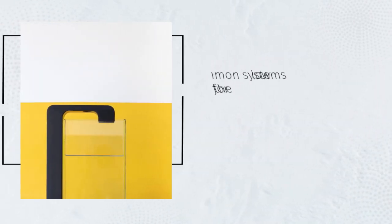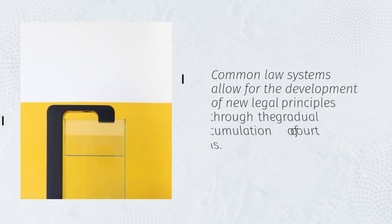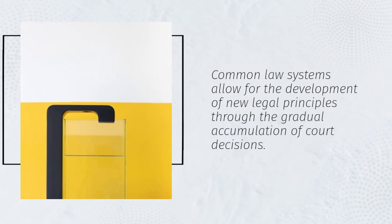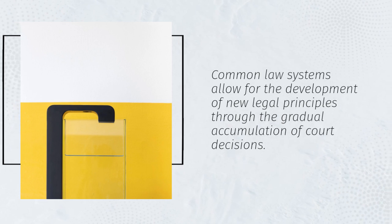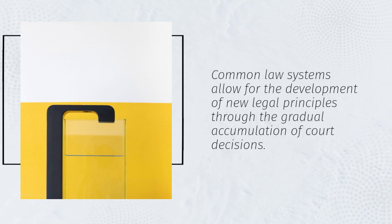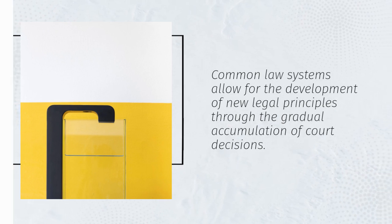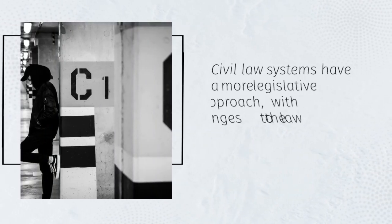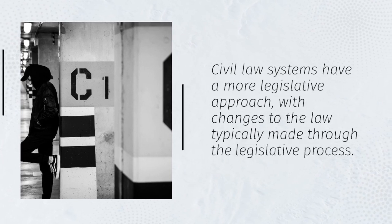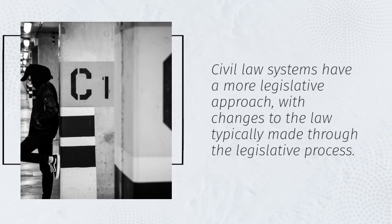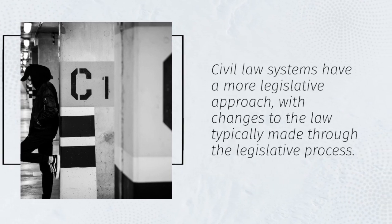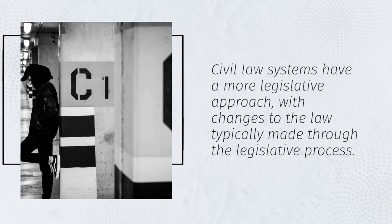Common law systems allow for the development of new legal principles through the gradual accumulation of court decisions. Civil law systems have a more legislative approach, with changes to the law typically made through the legislative process.